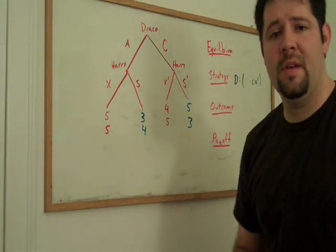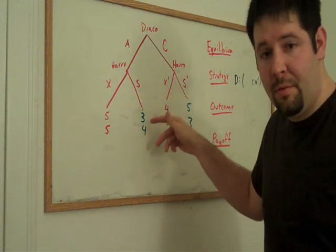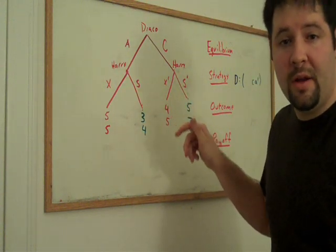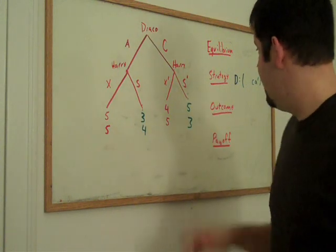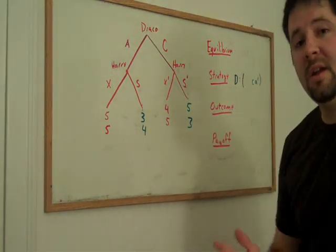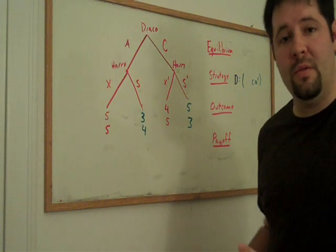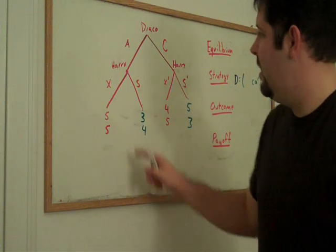Okay, so what I did is I promoted the payoffs up to the next level. The payoffs of three and four given that Draco chose C. And the payoffs of five and three given that Draco chose A prime. But we can keep track of what precisely Draco's moves are throughout this game.